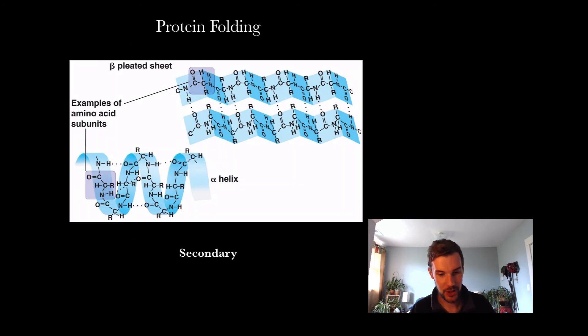The secondary structure is the beta pleated sheet or alpha helix. Helix is just a wound structure and that is due to hydrogen bonds or hydrogen bonding.